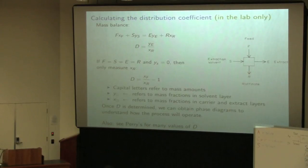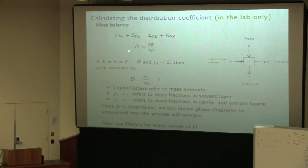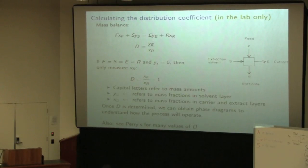Picking a solvent is really, really tough — it's a tradeoff among many criteria. But the most important ones by far are those first two: in terms of mass transfer, getting a high distribution coefficient for the solute and a low distribution coefficient for the carrier.